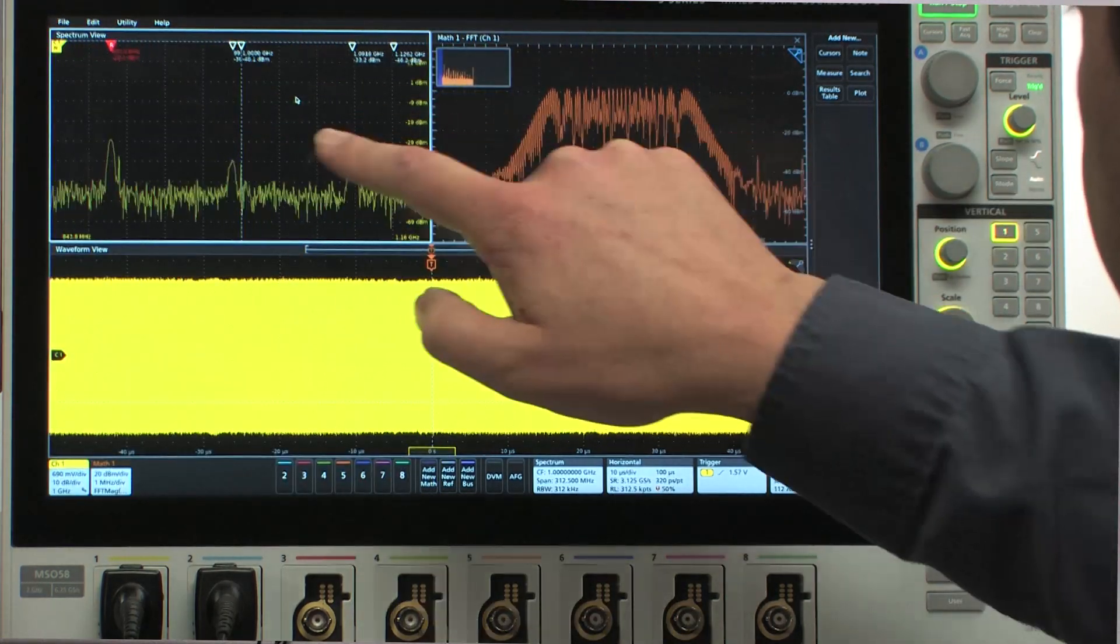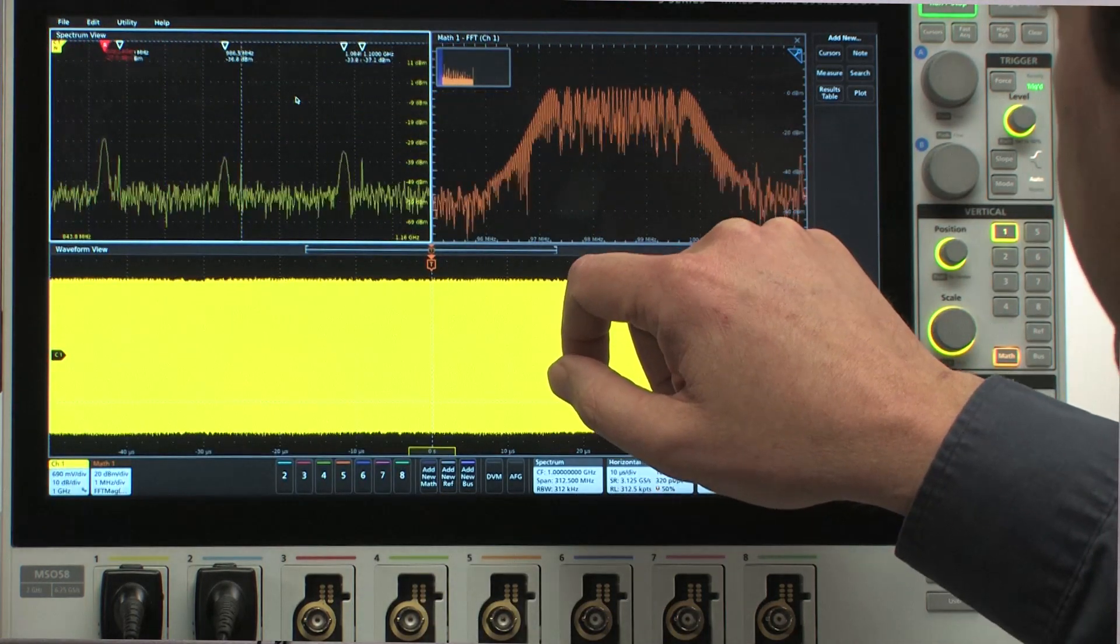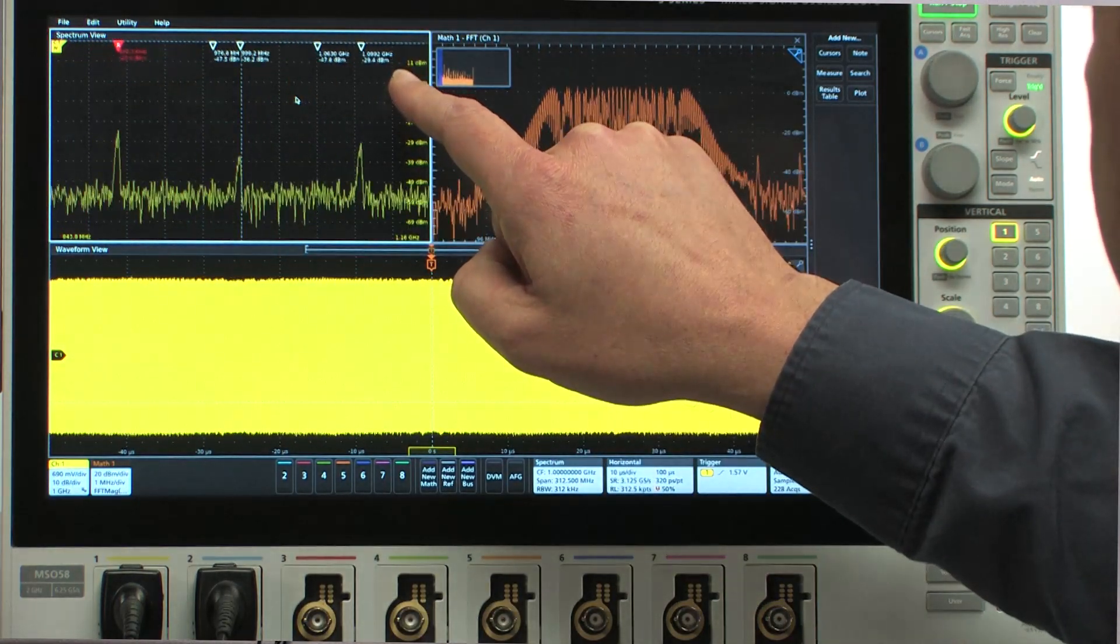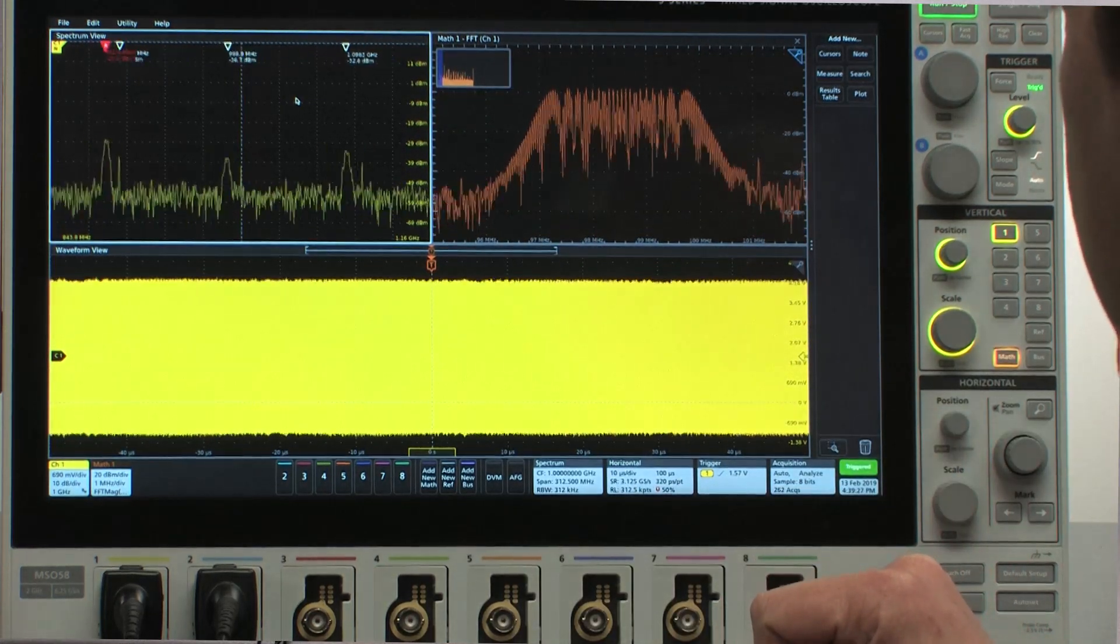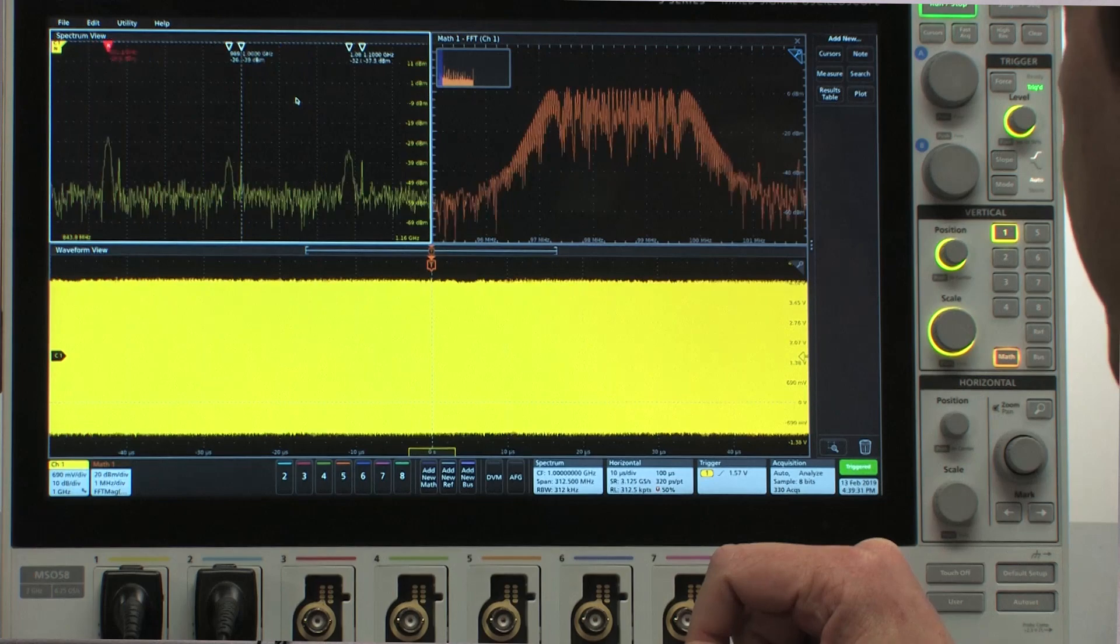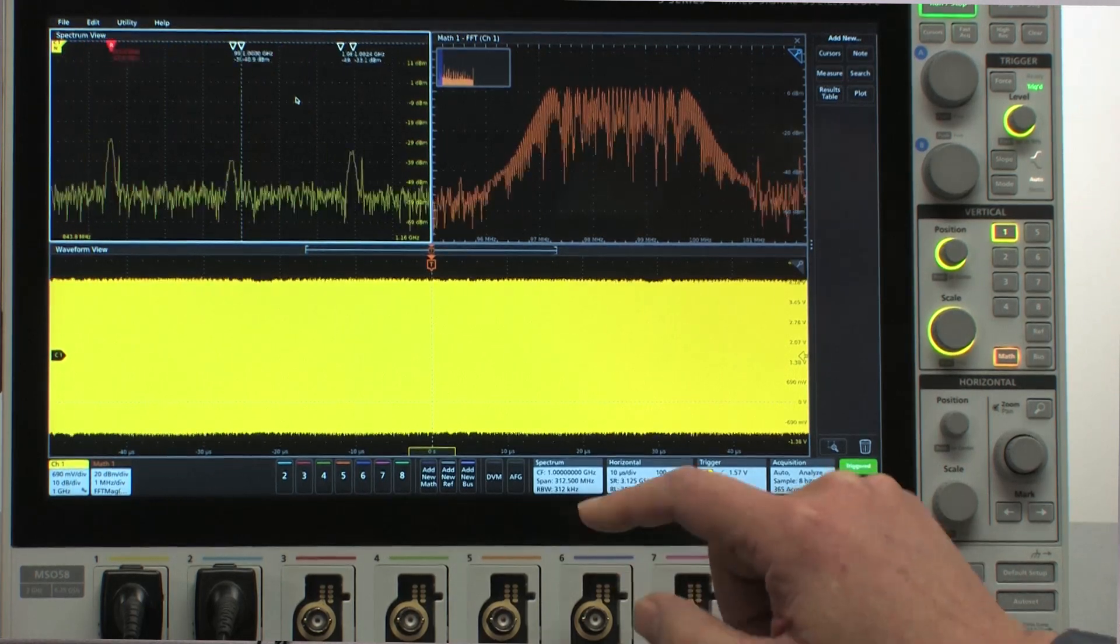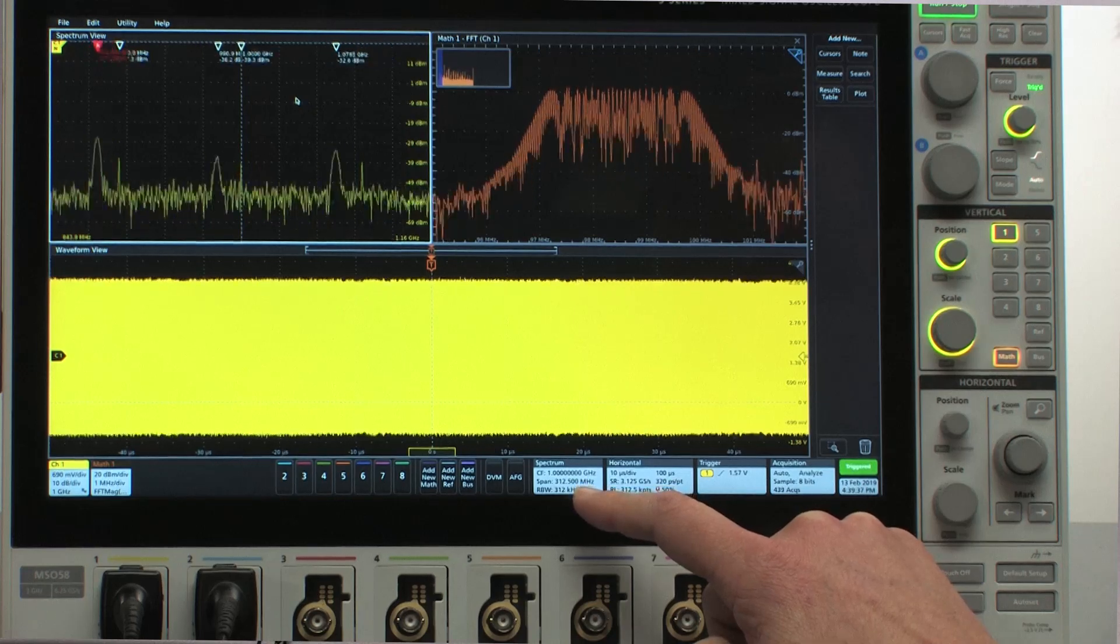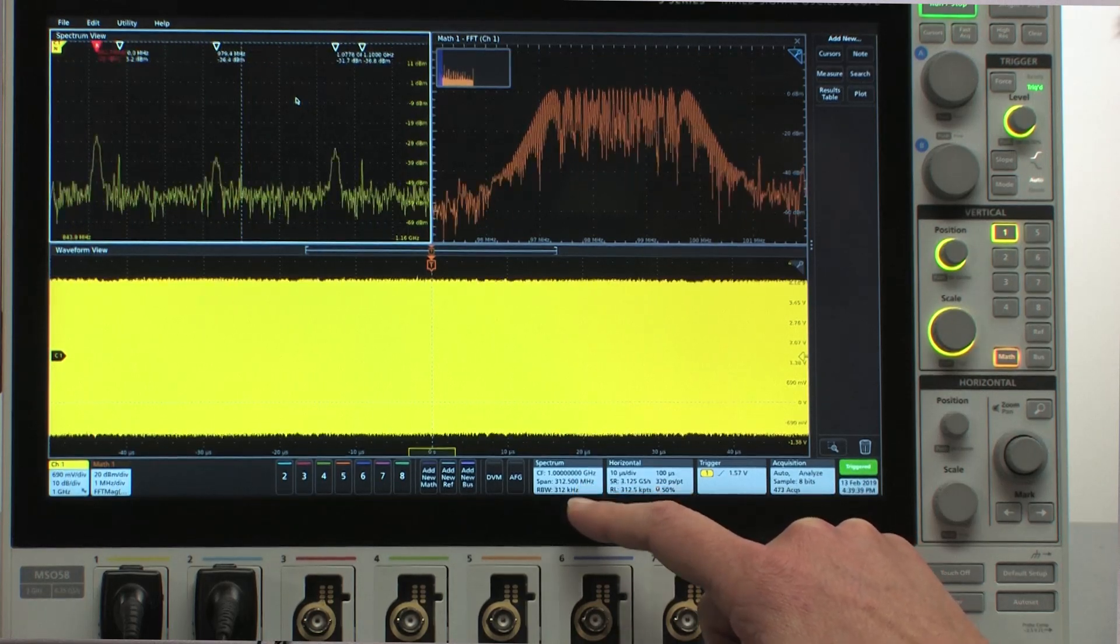The first thing I'm going to do is drag this view such that I can see both of my frequency domain views side by side for easy comparison. A couple of things to notice immediately: first, automatic peak markers indicate the frequency and amplitude of the highest magnitude peaks in the Spectrum View display.